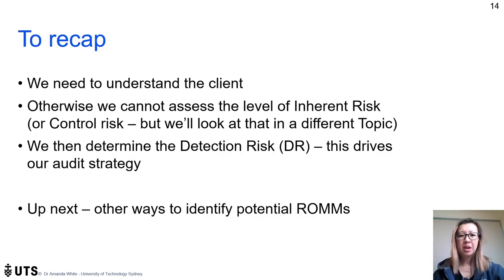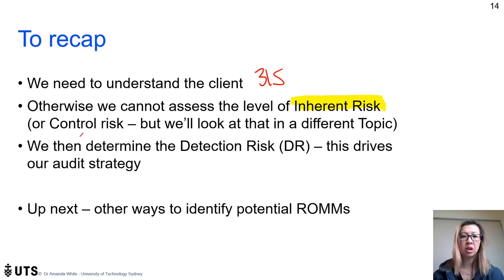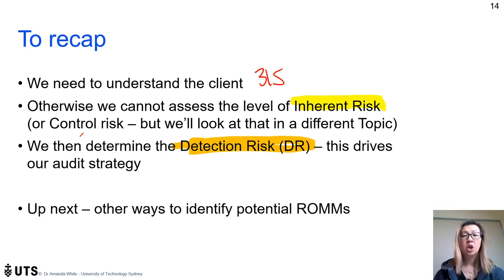To recap: we need to understand the client according to ASA 315 — without that understanding we cannot assess inherent risk. This week focuses only on inherent risk; you just need to know how control risk fits into the model without yet assessing it. We then looked at detection risk and what it means for audit strategy. In the next topic, we'll look at other ways to identify risks of material misstatement. Post any questions in the module discussion area and we'll answer them as soon as we can.